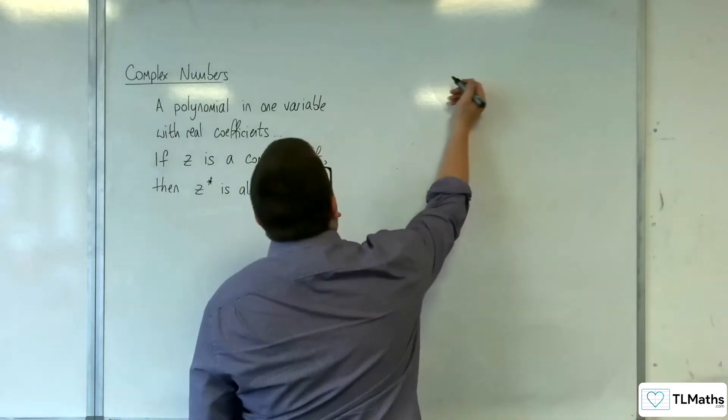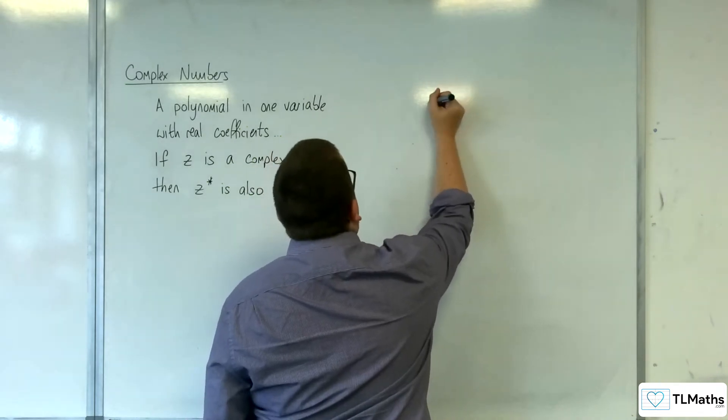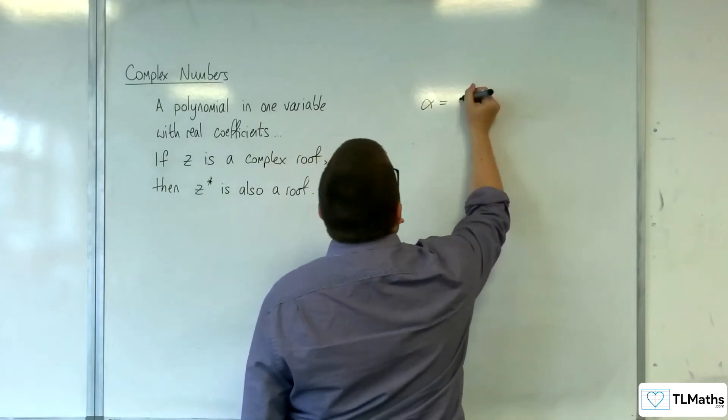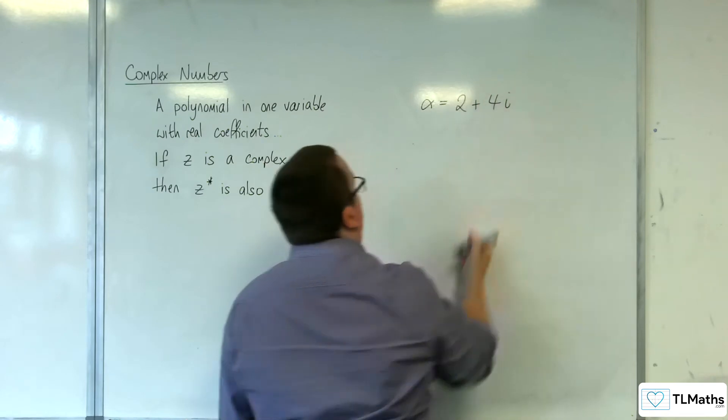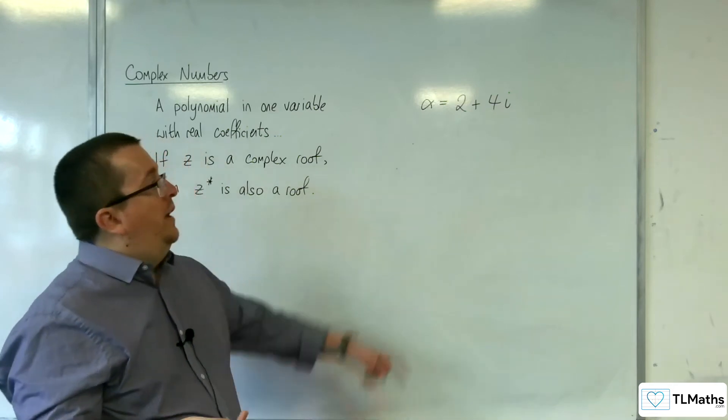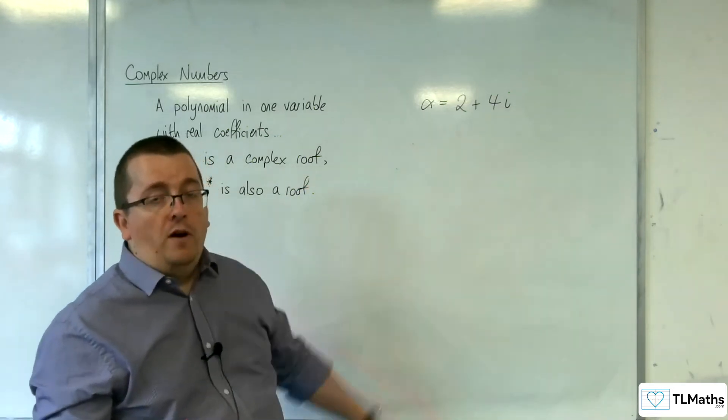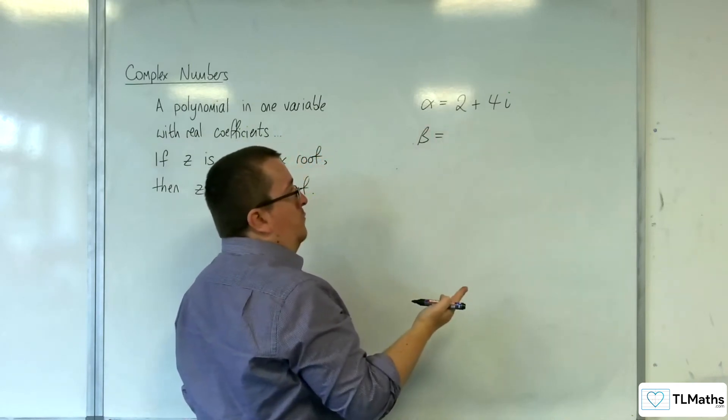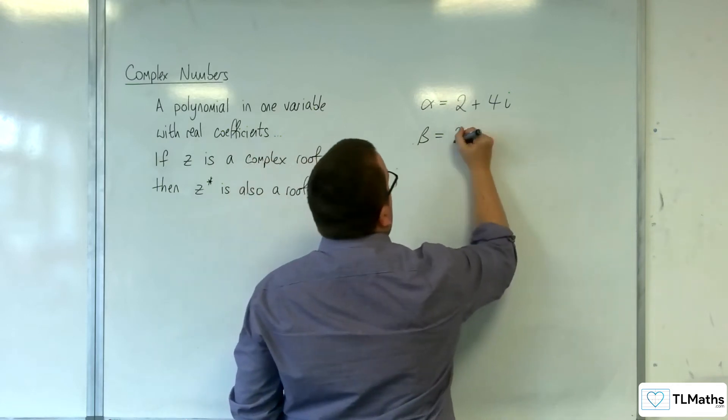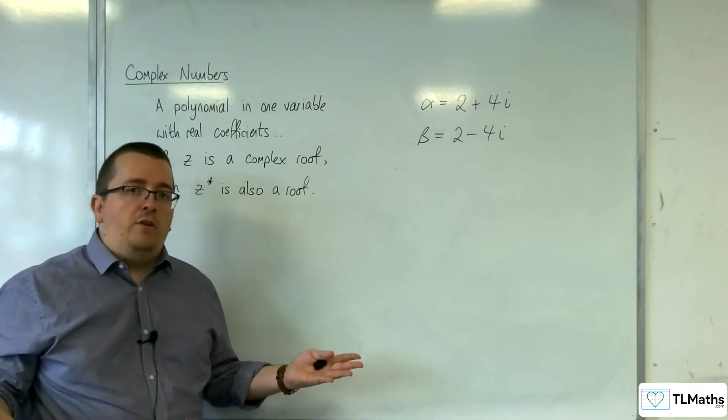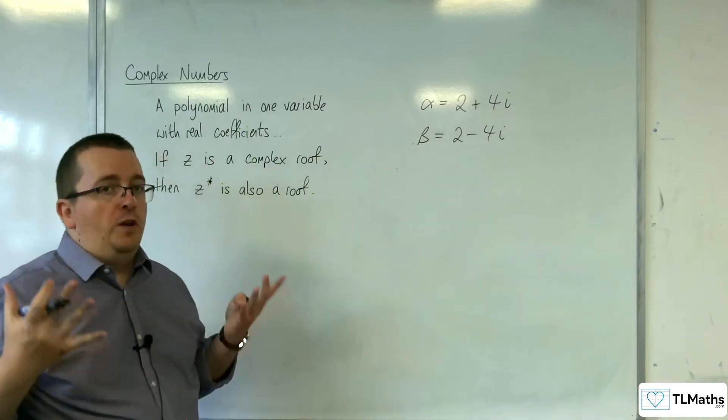So that means that if you told me that a polynomial had a root, let's say it's a quadratic and the first root, alpha, is 2 plus 4i. If I know that the quadratic has real coefficients and one root is 2 plus 4i, then I also know that the other root, beta, is the complex conjugate. I could state that straight off because it's a complex conjugate pair.